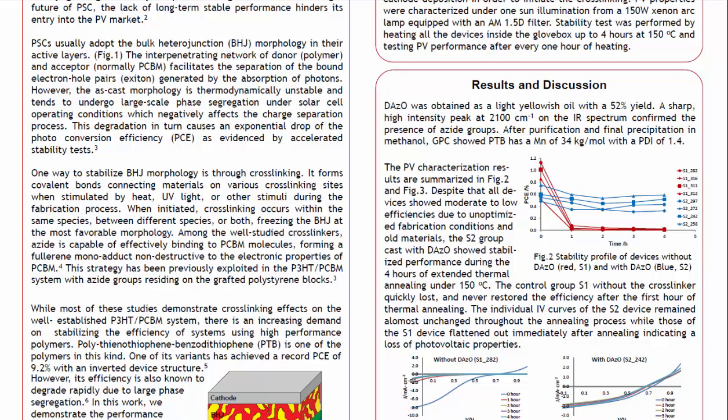One way to stabilize bulk heterojunction morphology is through crosslinking. It forms covalent bonds connecting materials on various crosslinking sites when stimulated by heat, UV light, or other stimuli during the fabrication process. When initiated, crosslinking occurs within the same species, between different species, or both, freezing the bulk heterojunction at the most favorable morphology.